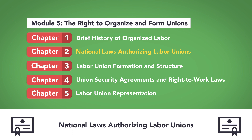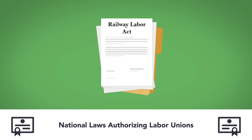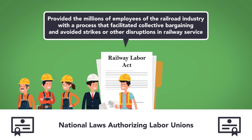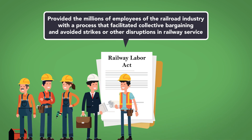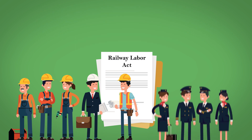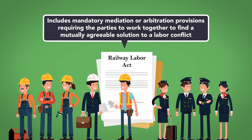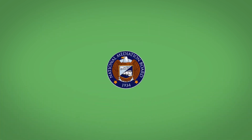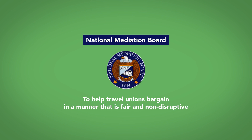National Laws Authorizing Labor Unions. The first American law authorizing collective bargaining was the Railway Labor Act of 1926, which provided the millions of employees of the railroad industry with a process that facilitated collective bargaining and avoided strikes or other disruptions in railway service. The act, which now applies to airlines as well, includes mandatory mediation or arbitration provisions requiring the parties to work together to find a mutually agreeable solution to a labor conflict. It also created a new federal agency, the National Mediation Board, to help travel unions bargain in a fair and non-disruptive manner.